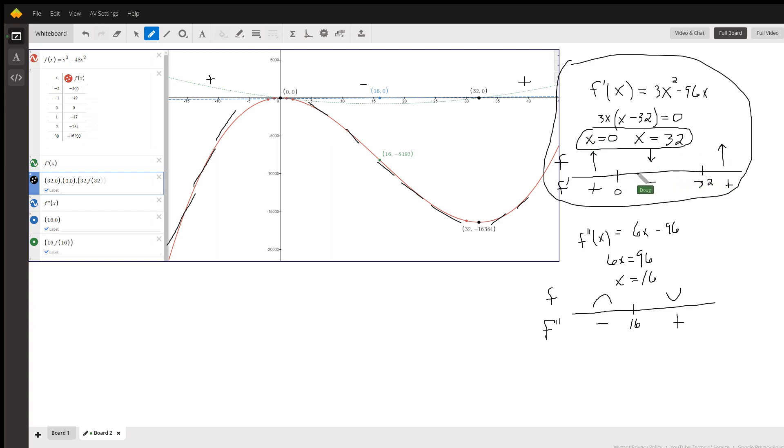They're 0 and 32, and we put those on a number line. 0 and 32 are the only numbers where the first derivative is equal to 0. Everywhere else, it's either positive or negative. So if we pick a number to the left of 0, like negative 1, picture putting it in here. Put a negative 1 in there for x. You'll see that you got 3 times negative 1 is negative. Negative 1 minus 32 is negative. Negative times negative is positive.